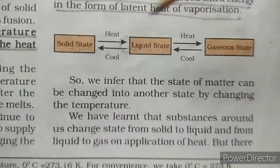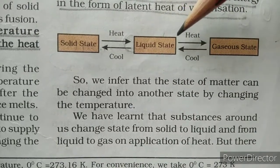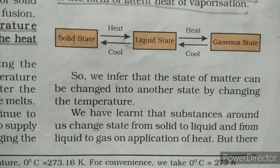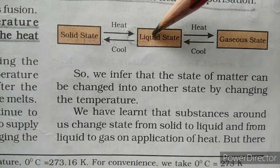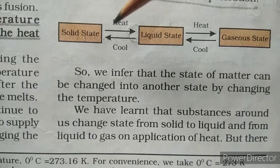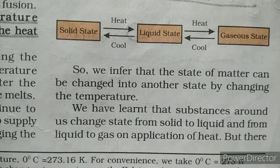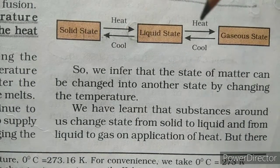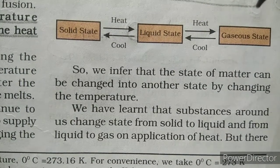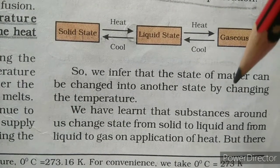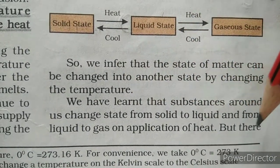When you heat a solid, it is converted to liquid state; heat further and the liquid is converted to gaseous state. When you cool a gas, it converts to liquid; cool further and the liquid becomes solid. We infer that the state of matter can be changed by changing the temperature. Substances around us change state from solid to liquid and from liquid to gas on application of heat.